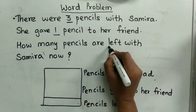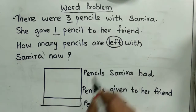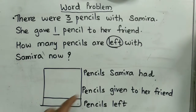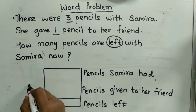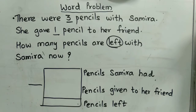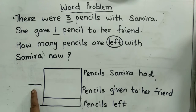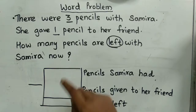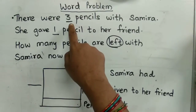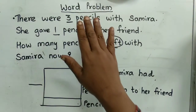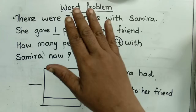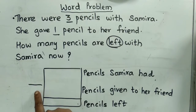The word 'left' is there. So whenever the word 'left' appears, we have to do minus. What do we have to do? Minus — subtraction. And here, the number of pencils is decreasing. So whenever the number is decreasing, we have to do minus.